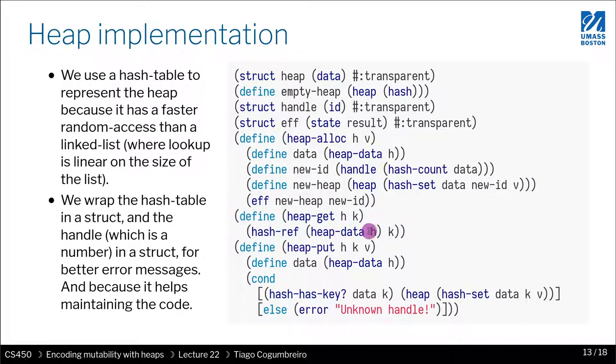So what does heap-get do? Well, heap-get is very simple. Basically, it gets the hash table from the heap and then performs a hash-ref, which just does a lookup on the hash table.